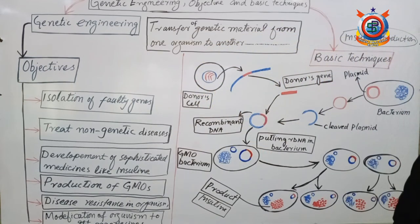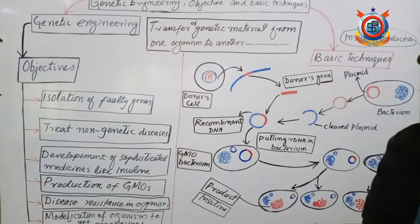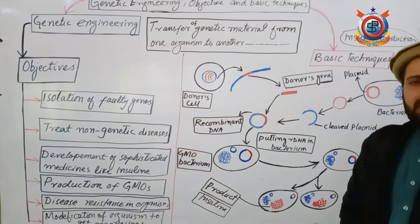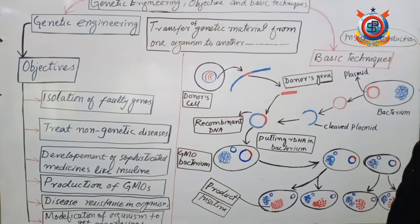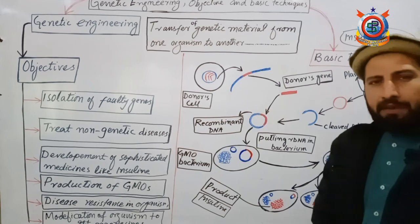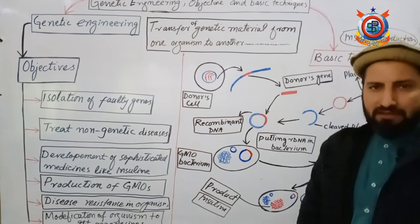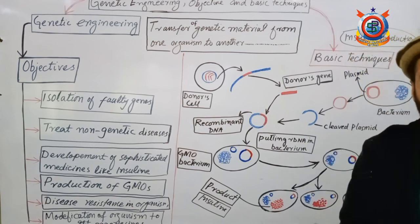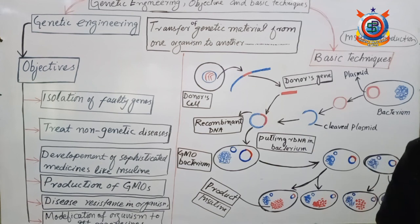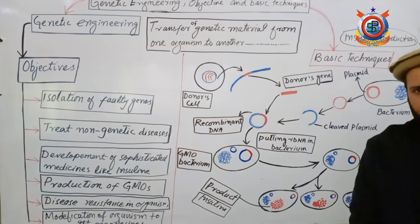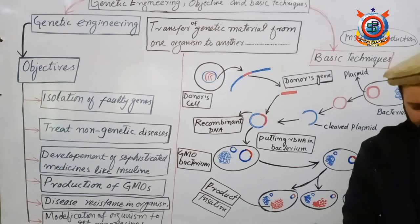So these are all the basic techniques of genetic engineering. With this, your topic is complete. You learned what genetic engineering is, then you learned about its objectives — why we perform genetic engineering — and finally you learned the basic techniques of how genetic engineering is done. This topic is now finished. InshaAllah we will meet again in the next topic. Until then, Allah Hafiz.